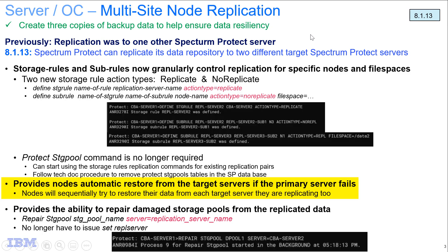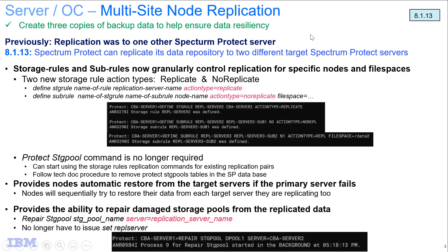The nodes will automatically fail over and try sequentially the other Spectrum Protect servers to restore their data from. You can also still issue a repair against a damaged storage pool and have that data pulled back from where it was replicated to. In this demo, our developer Jonathan Cummings will walk you through the command line implementation of multi-site node replication.